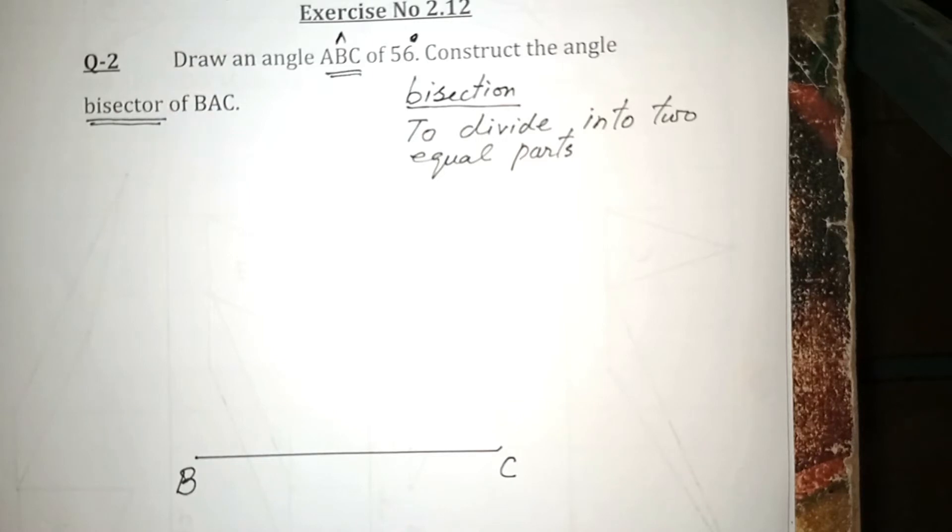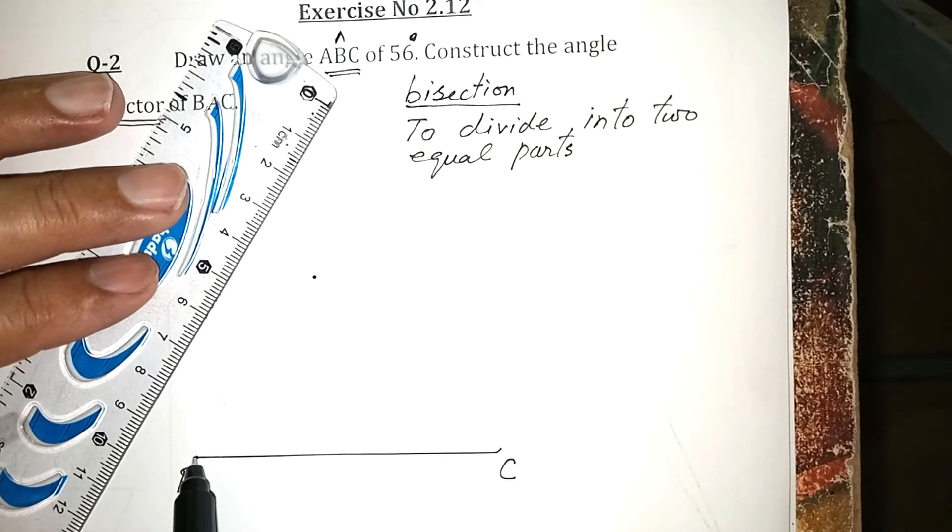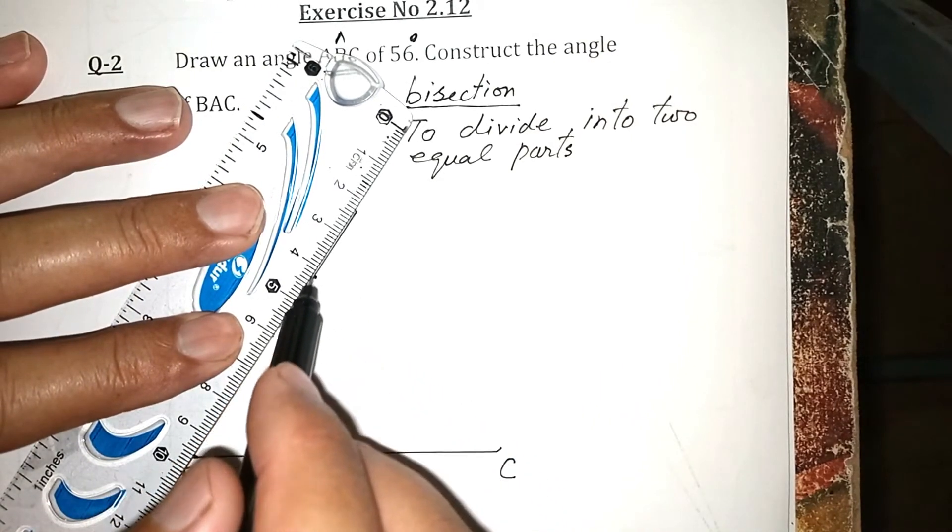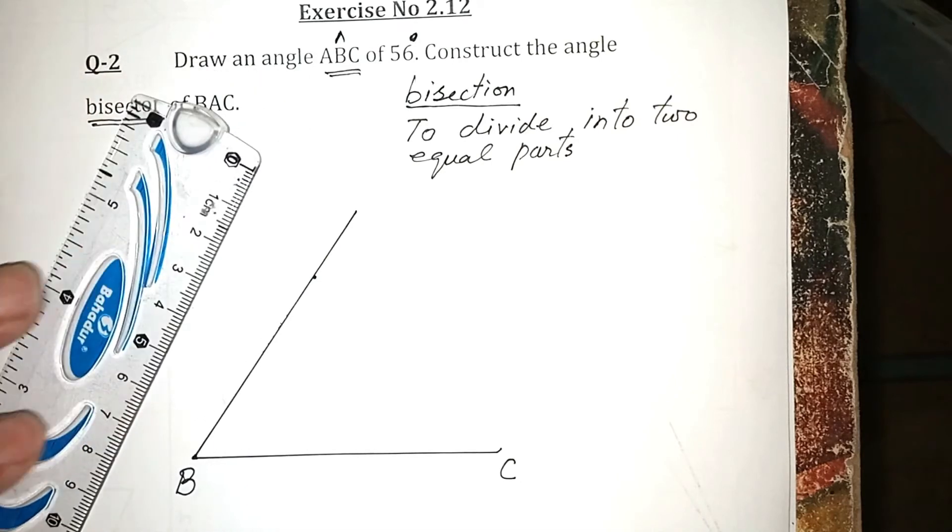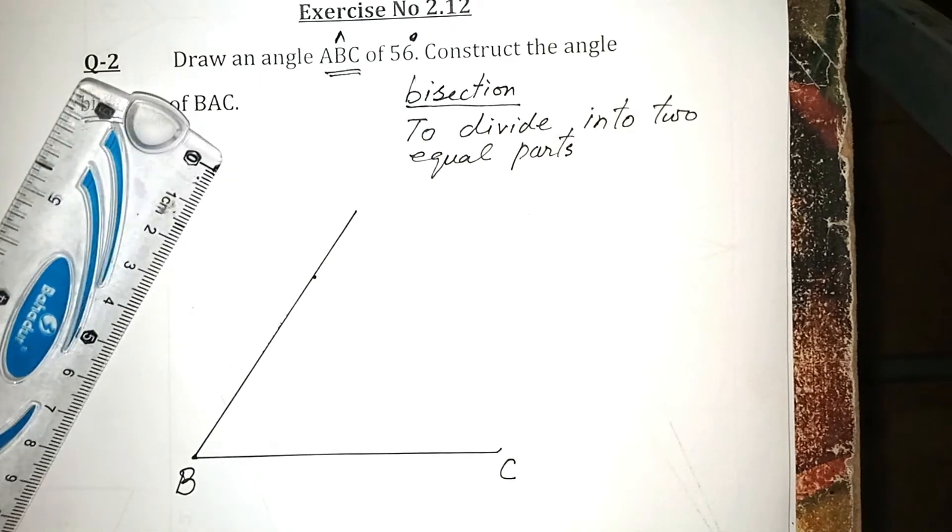Now with the help of the protractor, from here you must measure the angle 56. This is 50 and 56 will be here. Now make a line for angle 56. This is the line for the angle.